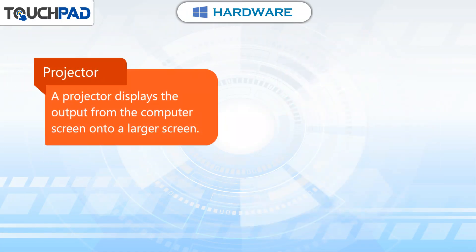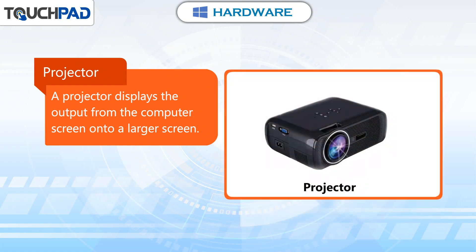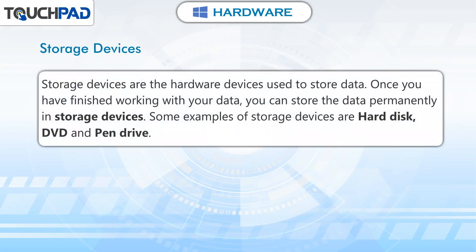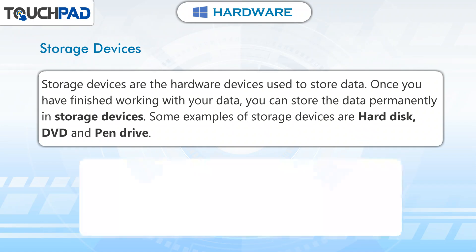Headphones are small speakers used to hear the sound without causing disturbance to others. Projector. A projector displays the output from the computer screen onto a larger screen. Storage devices. Storage devices are the hardware devices used to store data. Once you have finished working with your data, you can store the data permanently in storage devices.